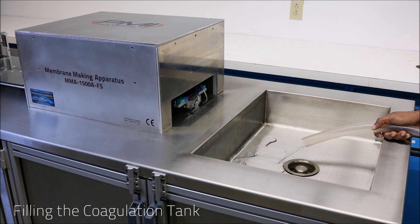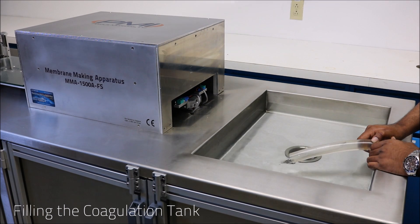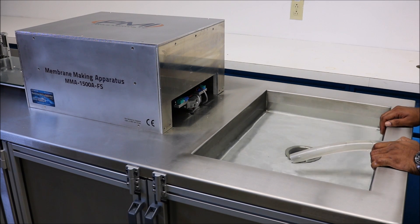Fill the coagulation tank with water to roughly 2 inches from the top. This will allow for submersion of the plate later on. Next we will move the plate back in order to pour the solution.